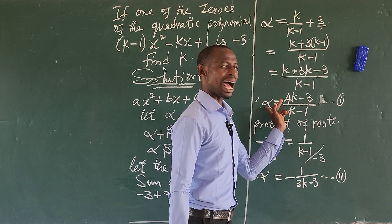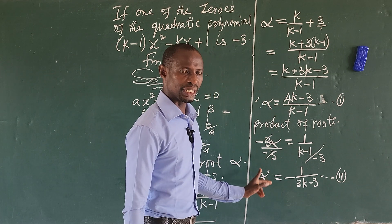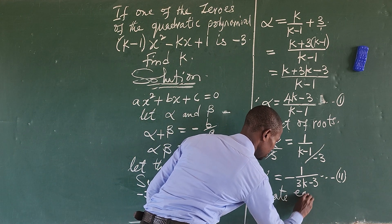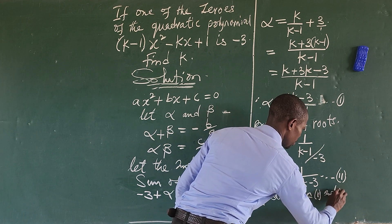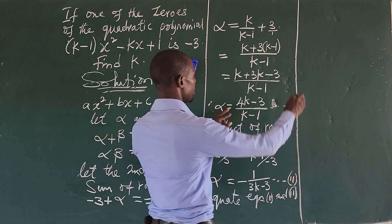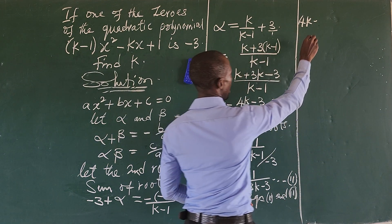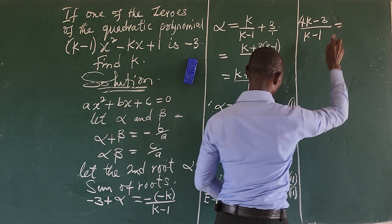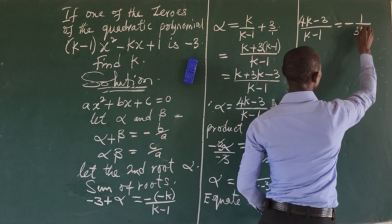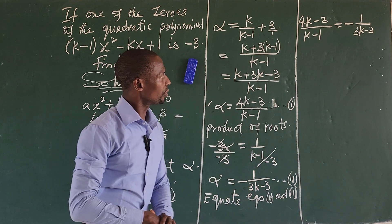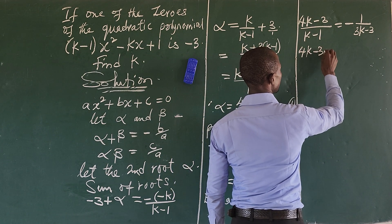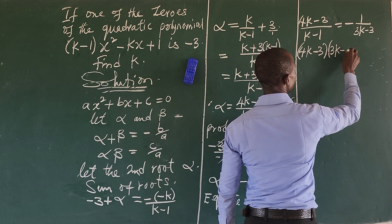We now have equation 1 with alpha on the left-hand side and equation 2 with alpha on the left-hand side, so we can equate equations 1 and 2. That gives us 4k minus 3 over k minus 1 equals minus 1 over 3k minus 3.